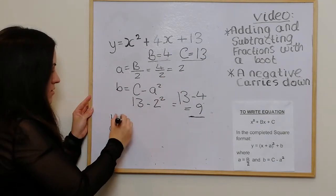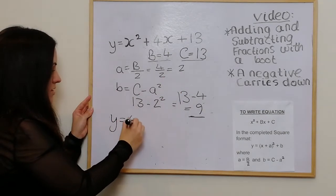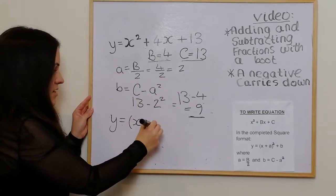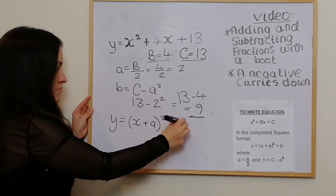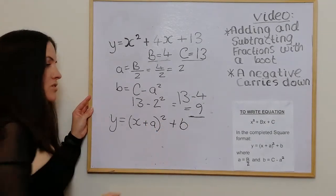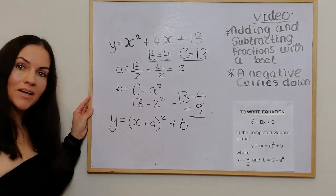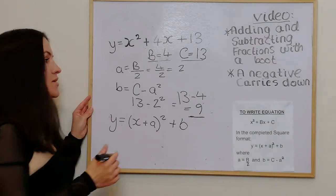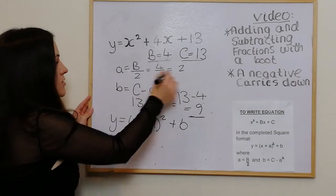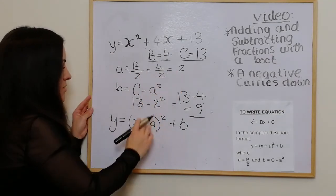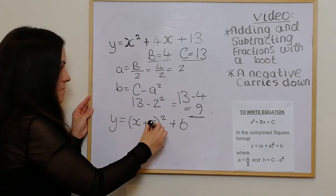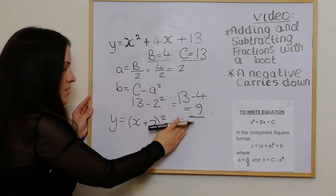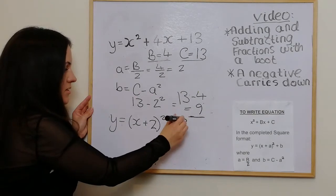In the equation y equals (x + a)² + b, we just replace the a and b values. The a becomes 2 and the b becomes 9.